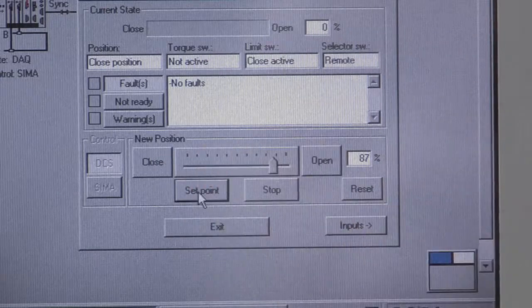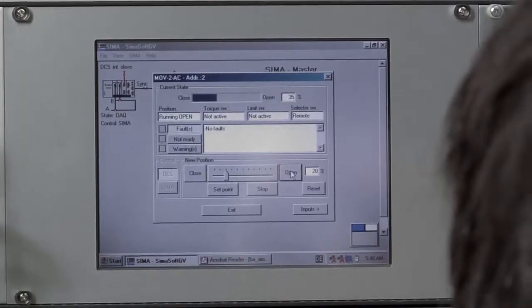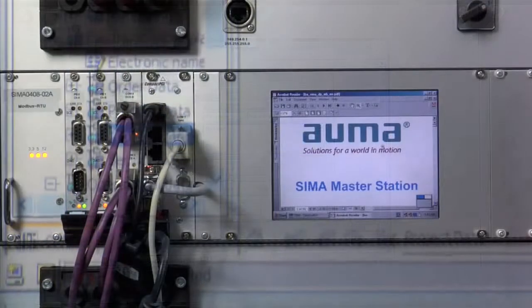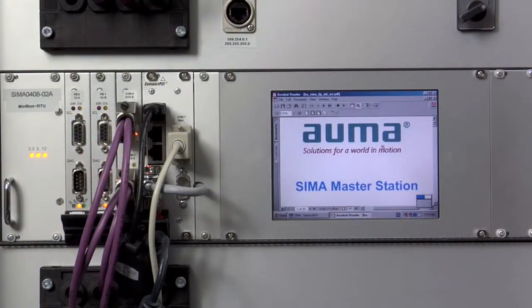CIMA master stations offer additional safety. In case of DCS failure, the part of the system concerned can be directly controlled via the CIMA master station. Safety. This is AOMA.